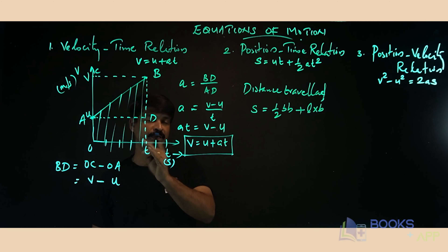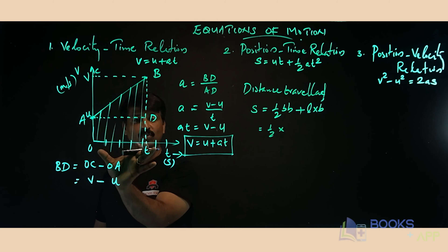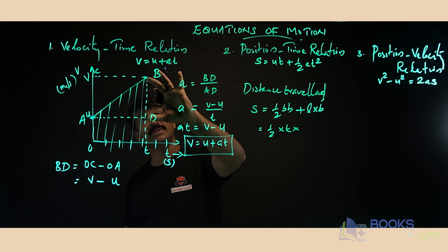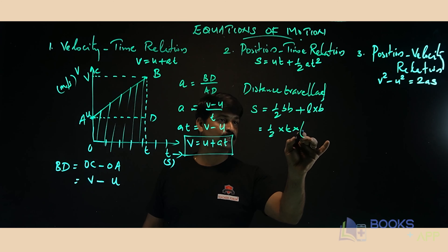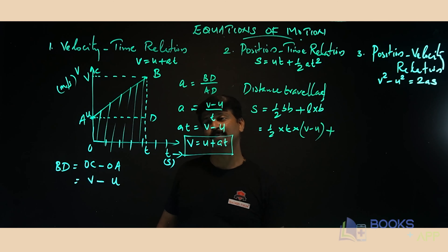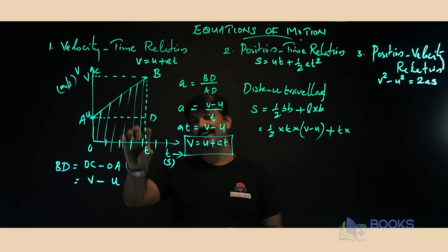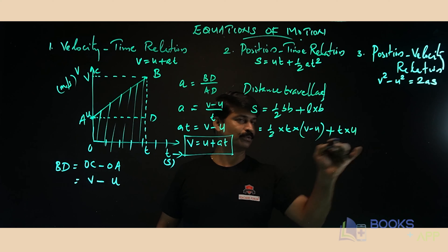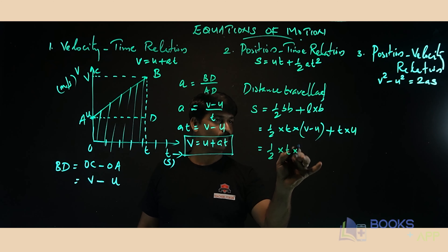The area under the graph equals the area of the triangle (½ × base × height) plus the area of the rectangle (length × breadth). The base of the triangle is AD, which equals t. The height is BD, which equals v minus u. The length of the rectangle is t, and the breadth is OA, which is u.